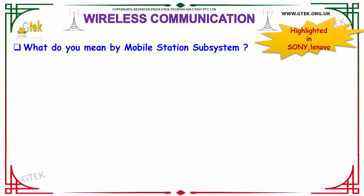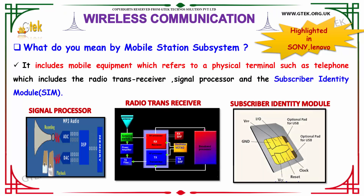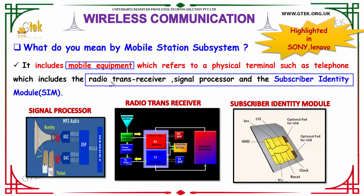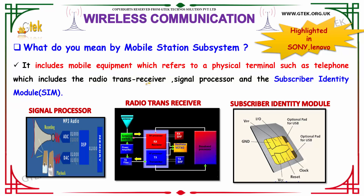What is Mobile Station Subsystem? A Mobile Station Subsystem is a mobile equipment which refers to a physical terminal such as a telephone. It includes a radio transceiver, a signal processor, and a subscriber identity module — which is your SIM card. These things combine to form a mobile station subsystem. These questions are asked in Sony and Lenovo interviews.